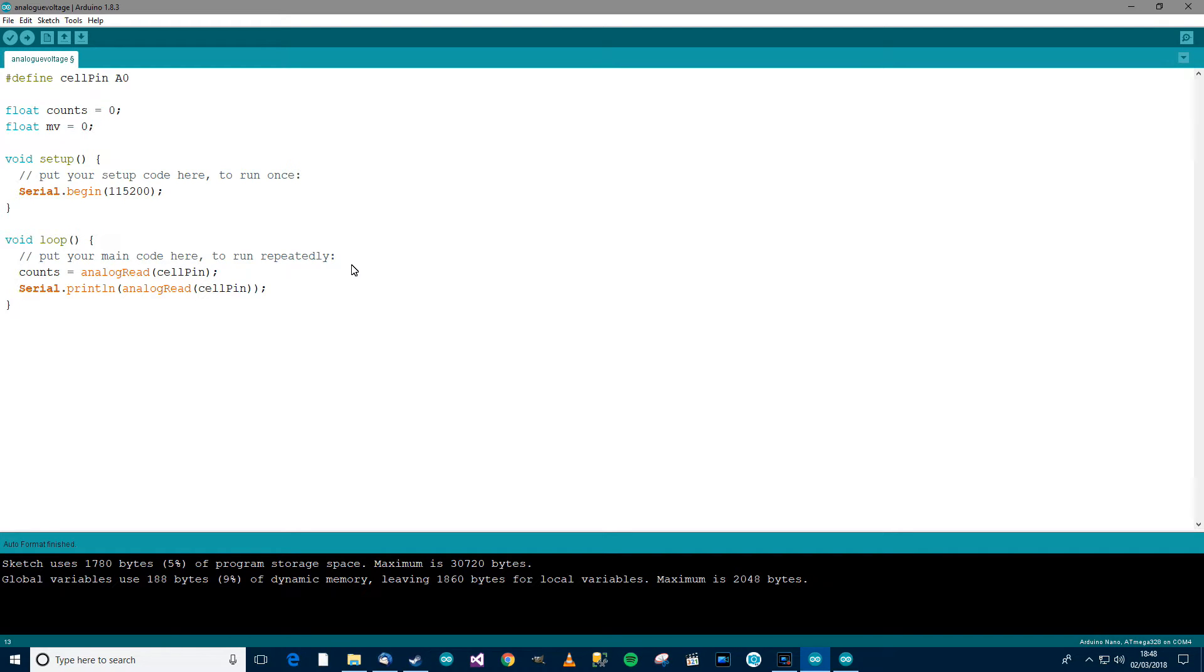And now, what should we do next? I suppose over here, analogRead cell pin, that will be counts. So counts equals that, which is of course counts. Control T, control S. So currently there'll be no change to the actual program, you know, if I was to go to the serial console. Let's carry on then.